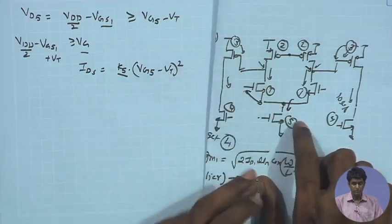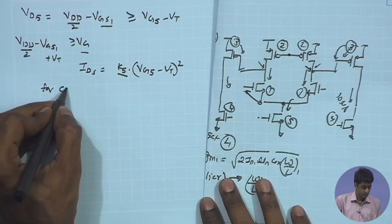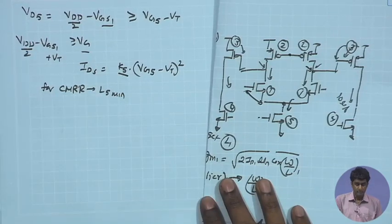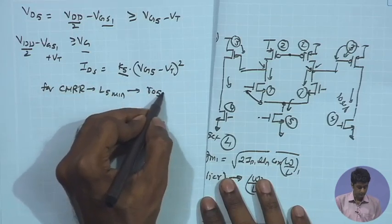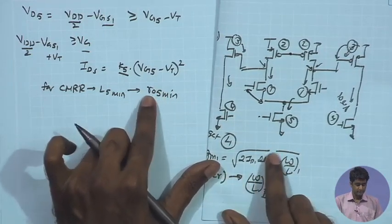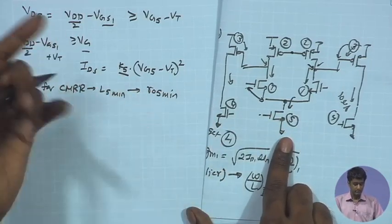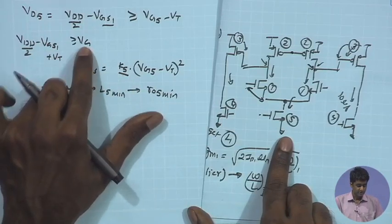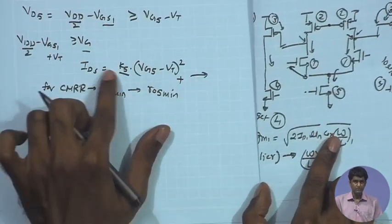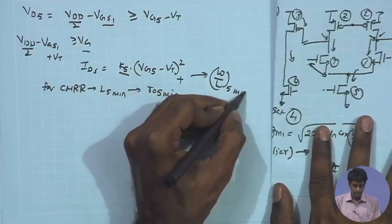Another very important constraint in determining W/L of M5 is the Common Mode Rejection Ratio (CMRR), which also plays an important role in determining the W and L values of M5. CMRR is proportional to the output resistance ro of the current source, which is in turn proportional to the channel length. So the required CMRR sets a minimum channel length L5_min.